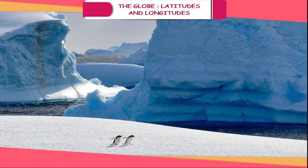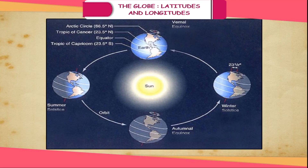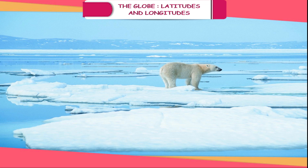The Frigid Zone — the meaning of 'frigid' is cold. This zone lies between the Arctic Circle and the North Pole in the Northern Hemisphere, and between the Antarctic Circle and the South Pole in the Southern Hemisphere. The temperatures remain very low throughout the year as this zone receives very slanting sun rays. These zones get the least amount of heat and are the coldest regions of the Earth.